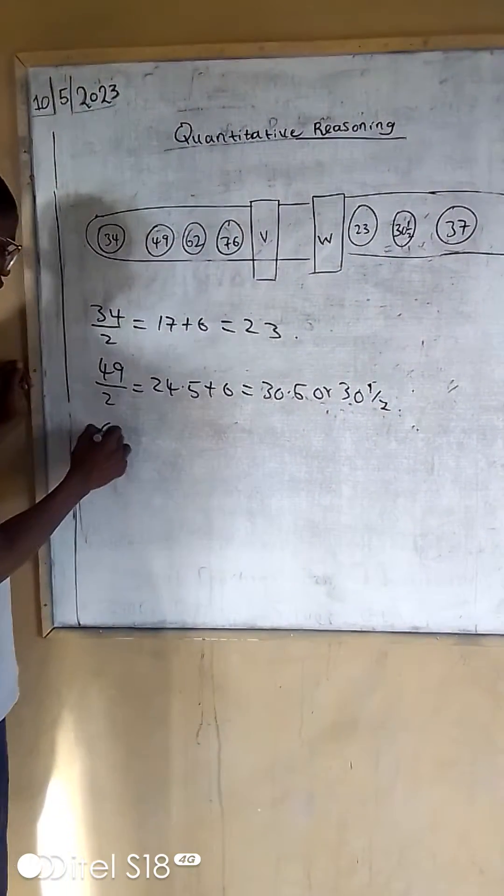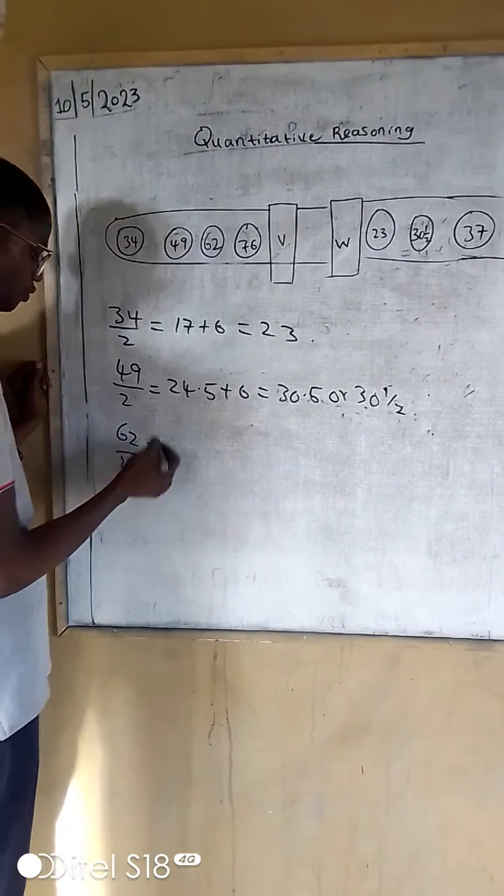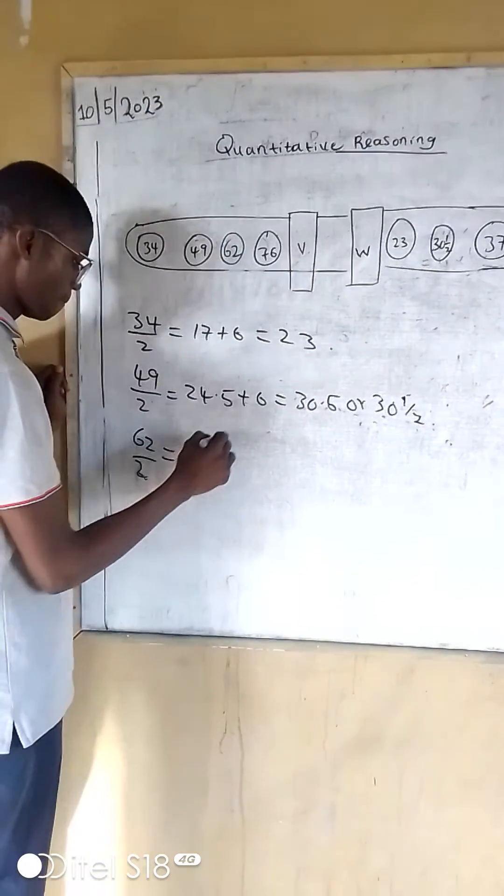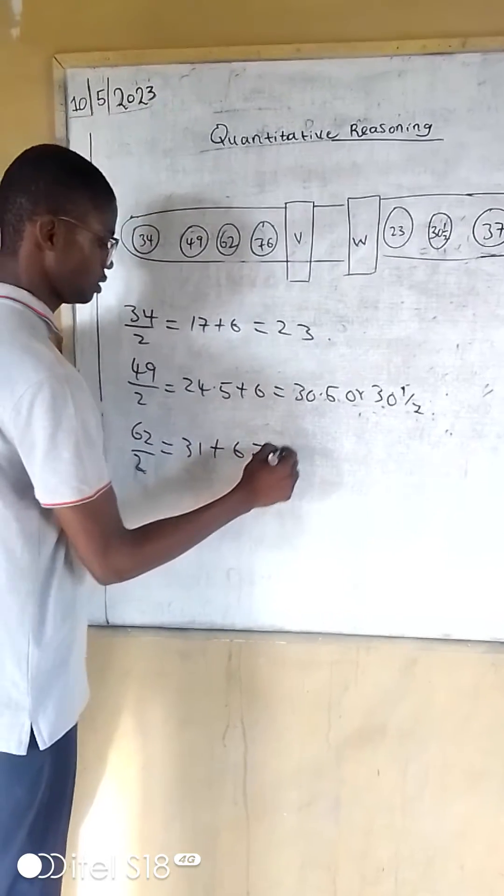Then 62, which is the third one, divided by 2 will give you 31 plus 6 will give you 37.